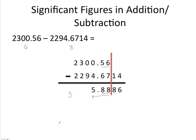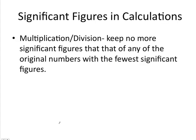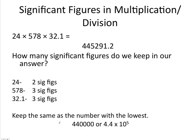What if we're going to multiply or divide? The rule for multiplication and division is that we need to keep no more significant figures than that of any of the original numbers with the fewest significant figures. If we are multiplying 24 times 578 times 32.1, you'll see that 24 has two significant figures, 578 has three, and 32.1 also has three. Because 24 only has two significant figures, we can only keep two significant figures in our answer. Although your calculator gives 445,291.2, we can only keep two significant figures, so it's probably best to write your answer in scientific notation.